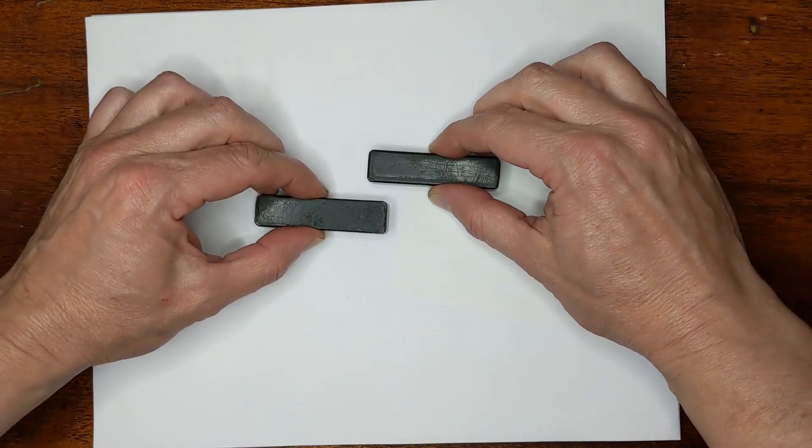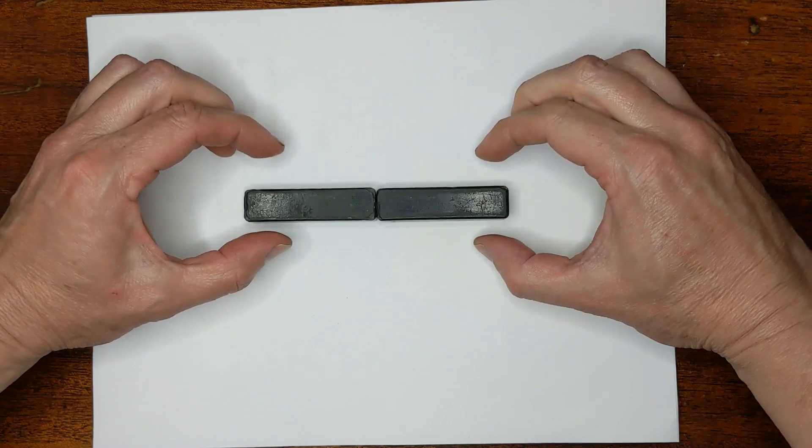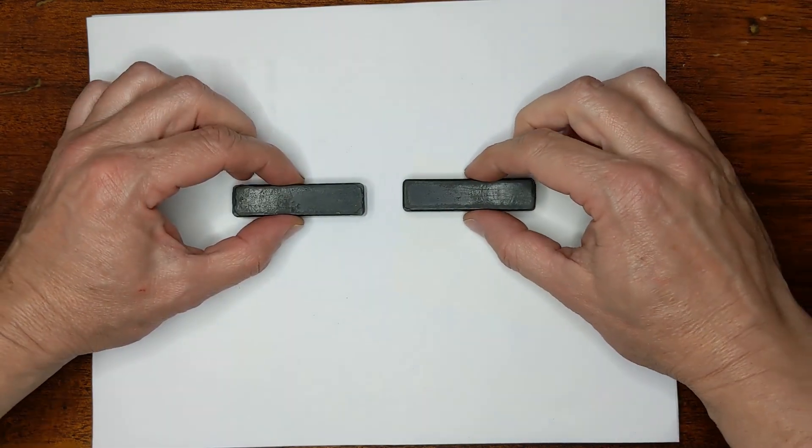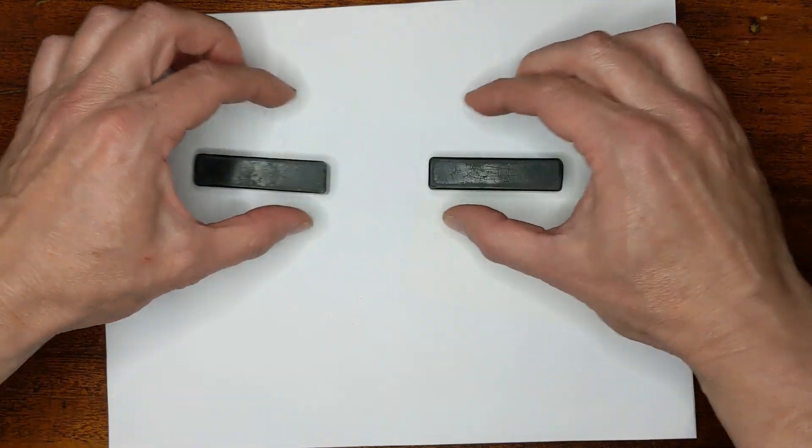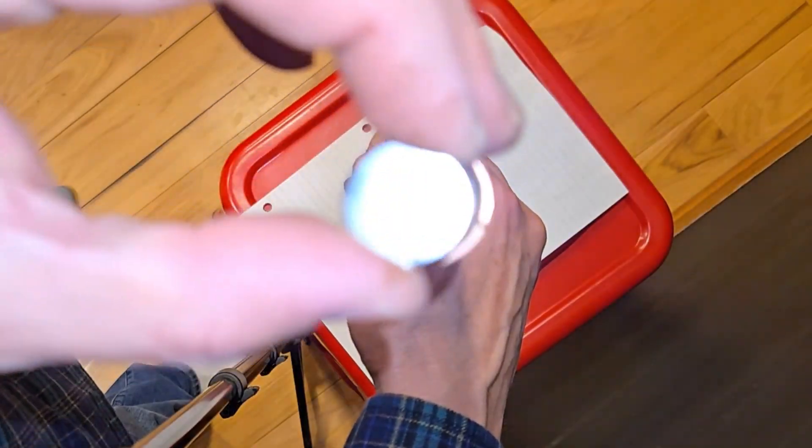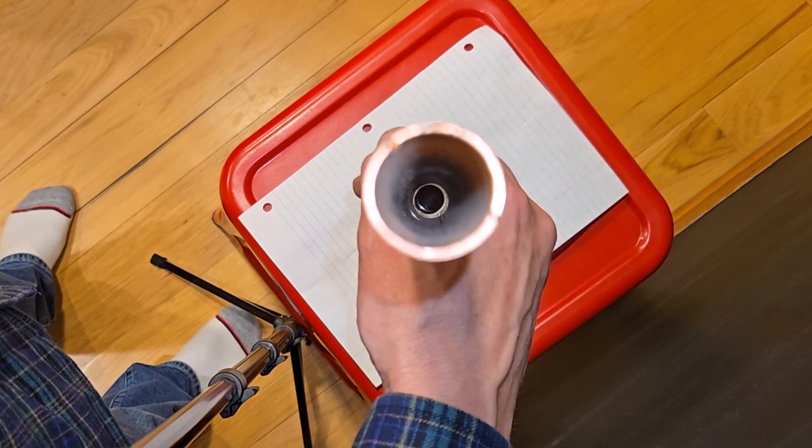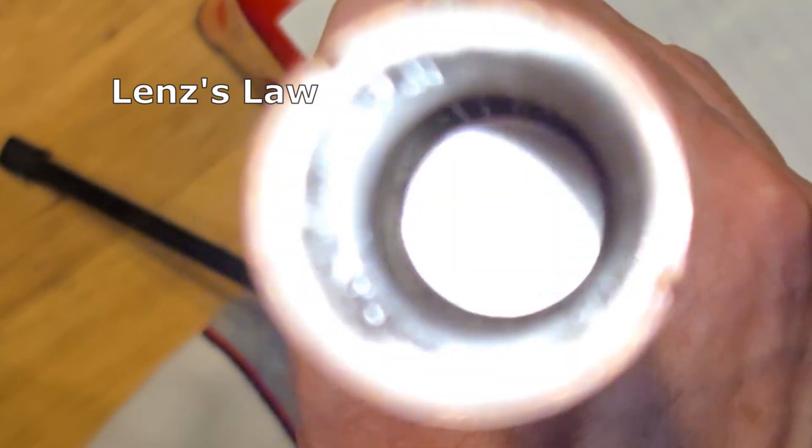Think of it like trying to push two magnets together. In one orientation, they attract each other, but flip one around and they repel each other. The same thing is happening between the falling magnet and the induced magnetic field in the pipe. The faster the magnet moves, the stronger the resistive force. This principle is called Lenz's Law.